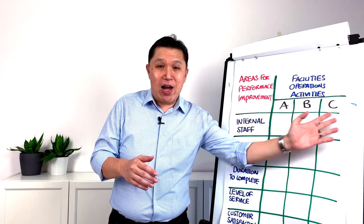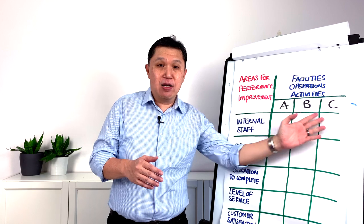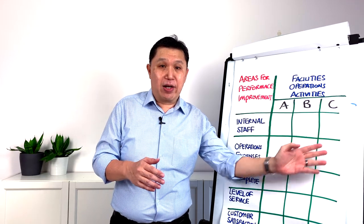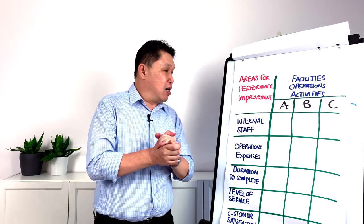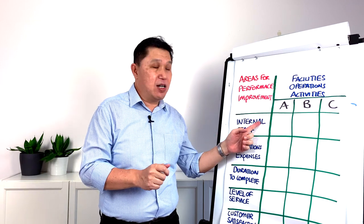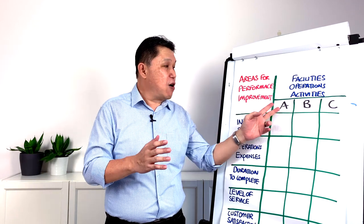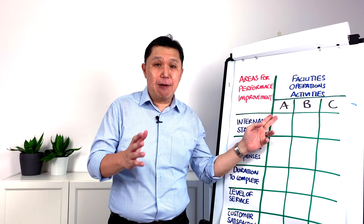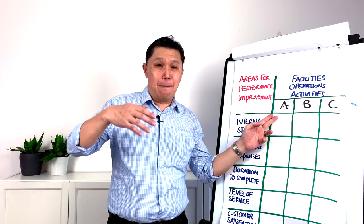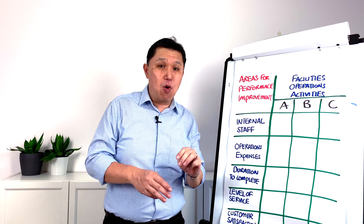What are the rankings? For example, if there are three activities, you rank them one, two, three. Three meaning which of the activities will be able to impact most of the results — three being the most impactful.